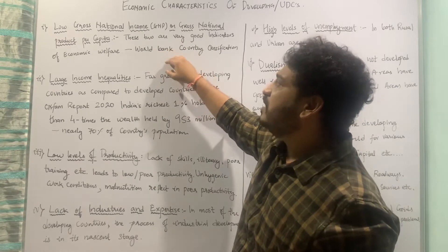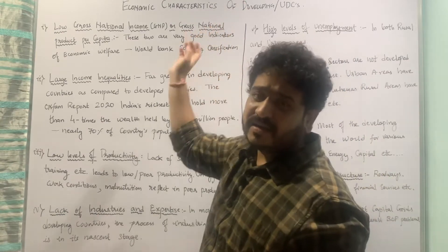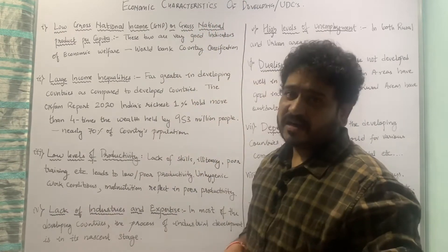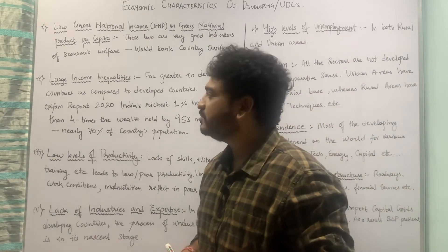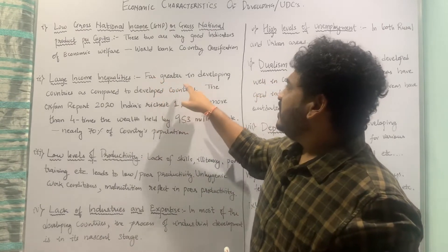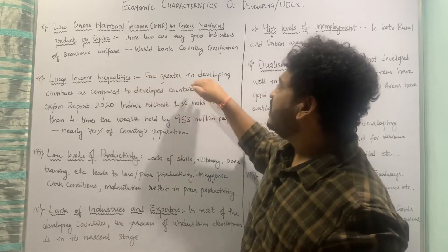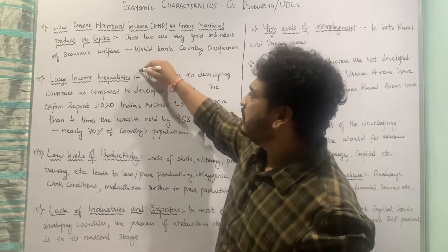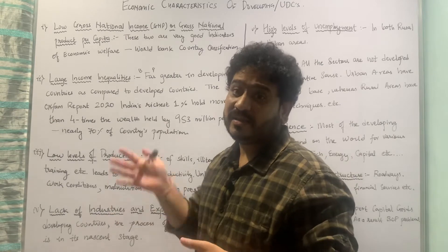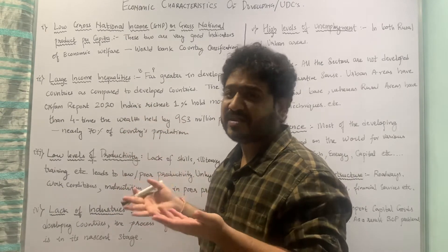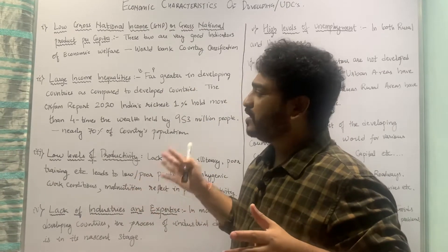You will find bad numbers in terms of GNP per capita or GNI per capita as far as underdeveloped countries or developing countries are concerned. Let us now move to the second point, which is of immense importance: large income inequalities. Income inequalities are far greater in developing countries as compared to developed countries. It is not that there is no income inequality in the developed world, but in relative sense you will find more income inequality between the rich and the poor in developing countries.